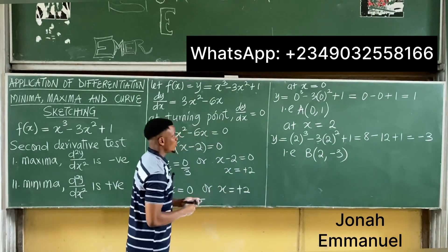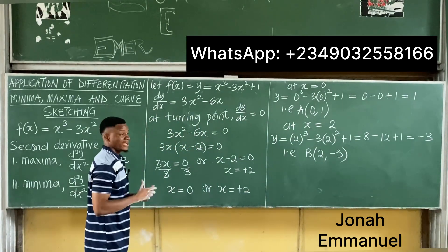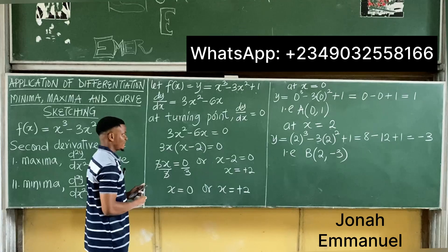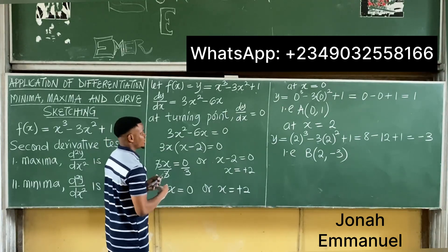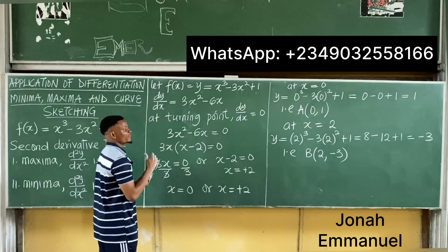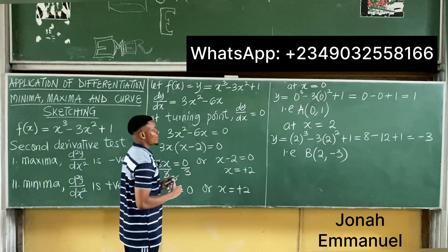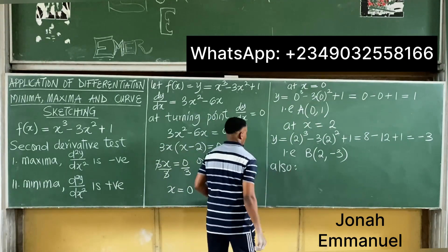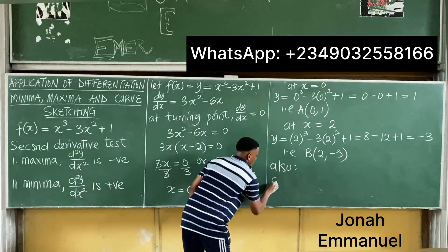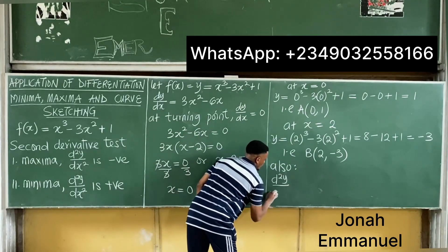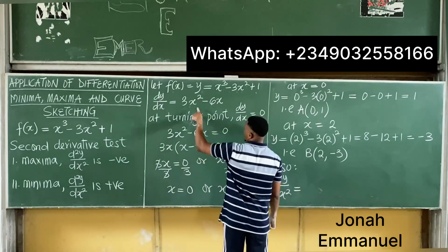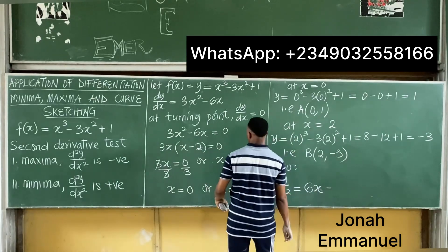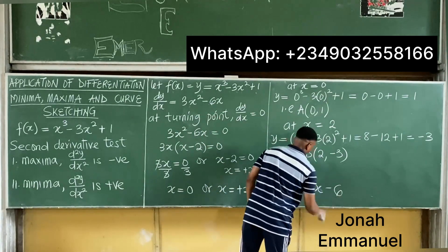Of these two points A and B, one is a minima and one is a maxima. Let's use the second derivative test. Since dy/dx is 3x squared minus 6x, differentiating again gives d²y/dx² equal to 6x minus 6.